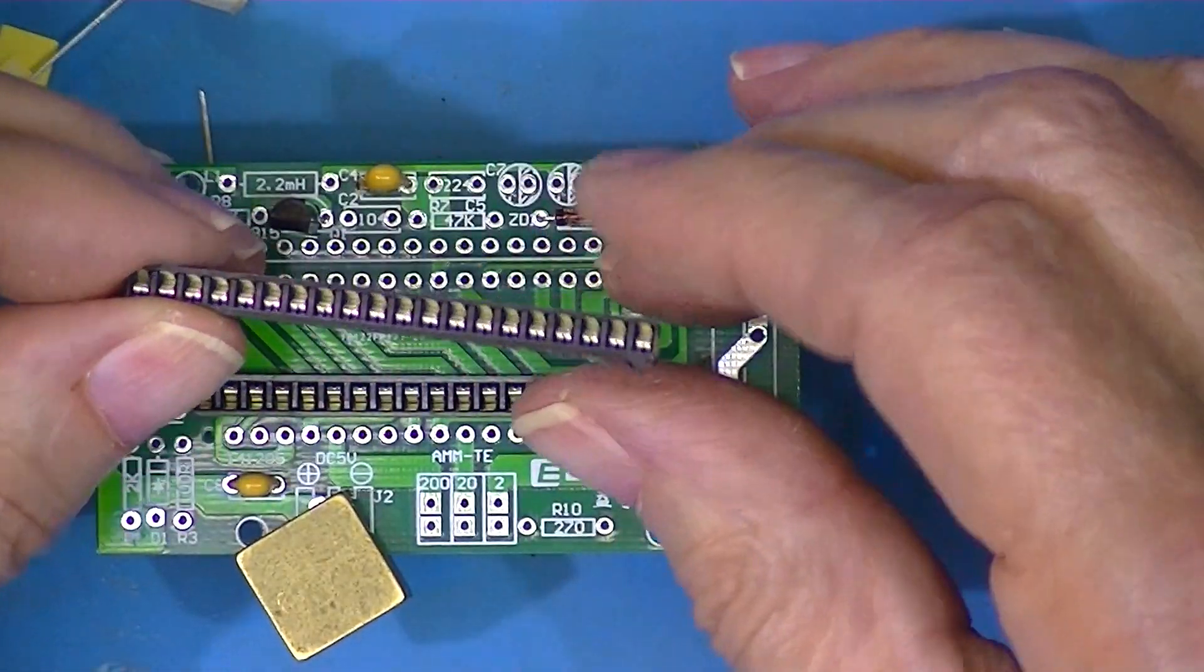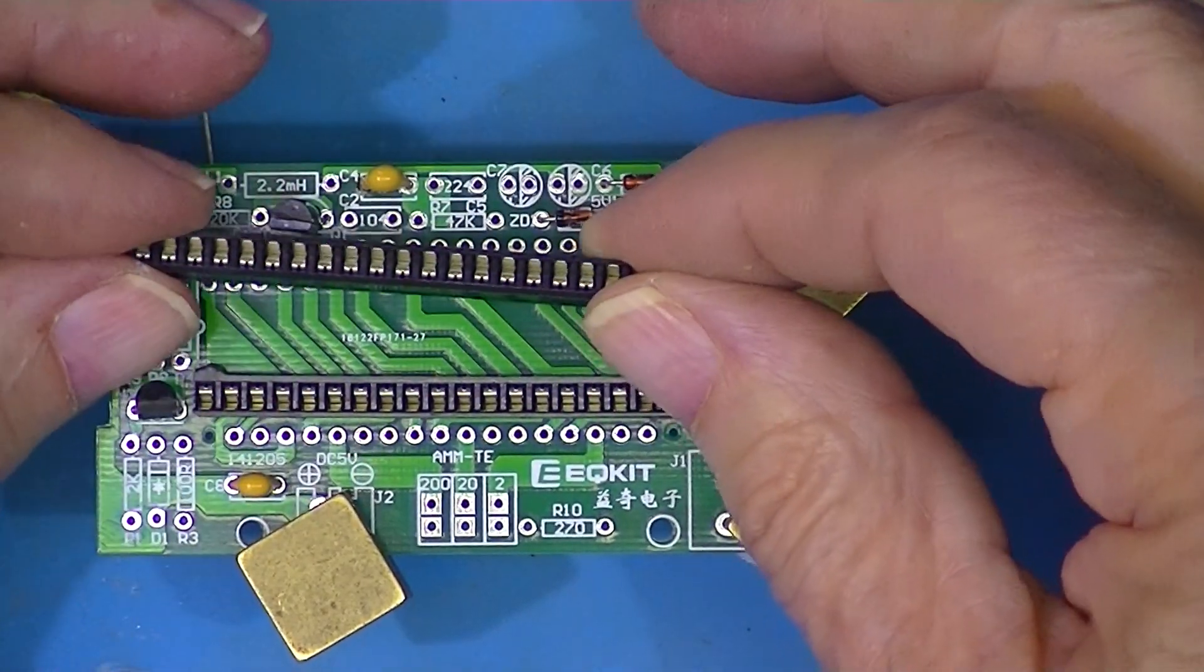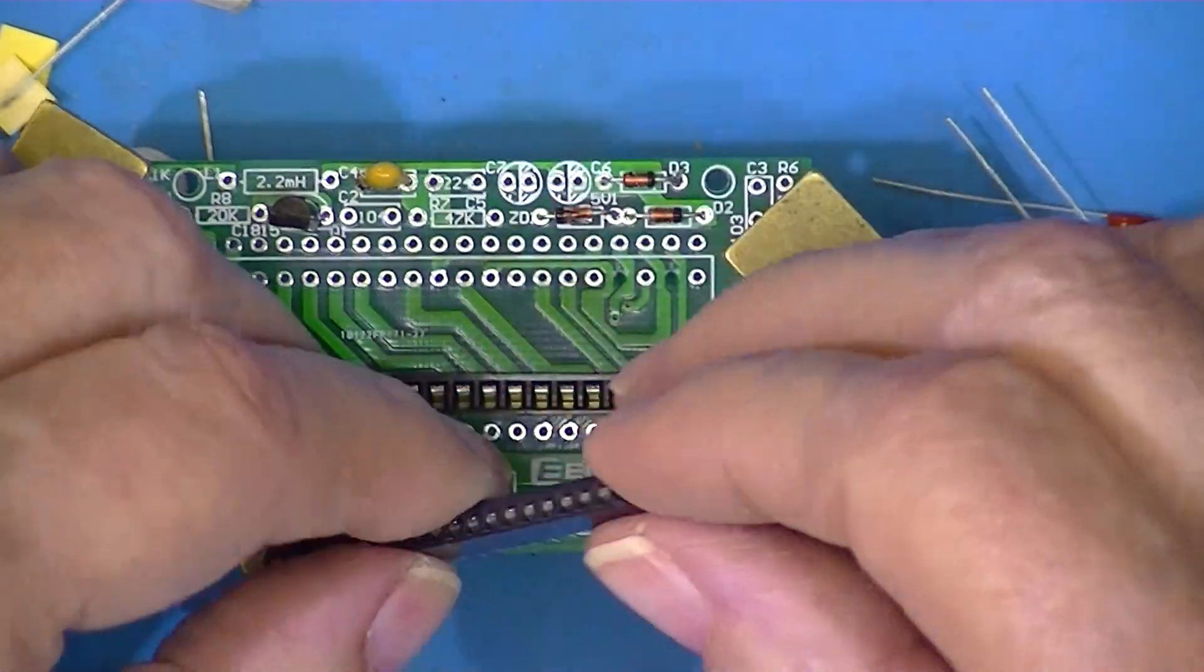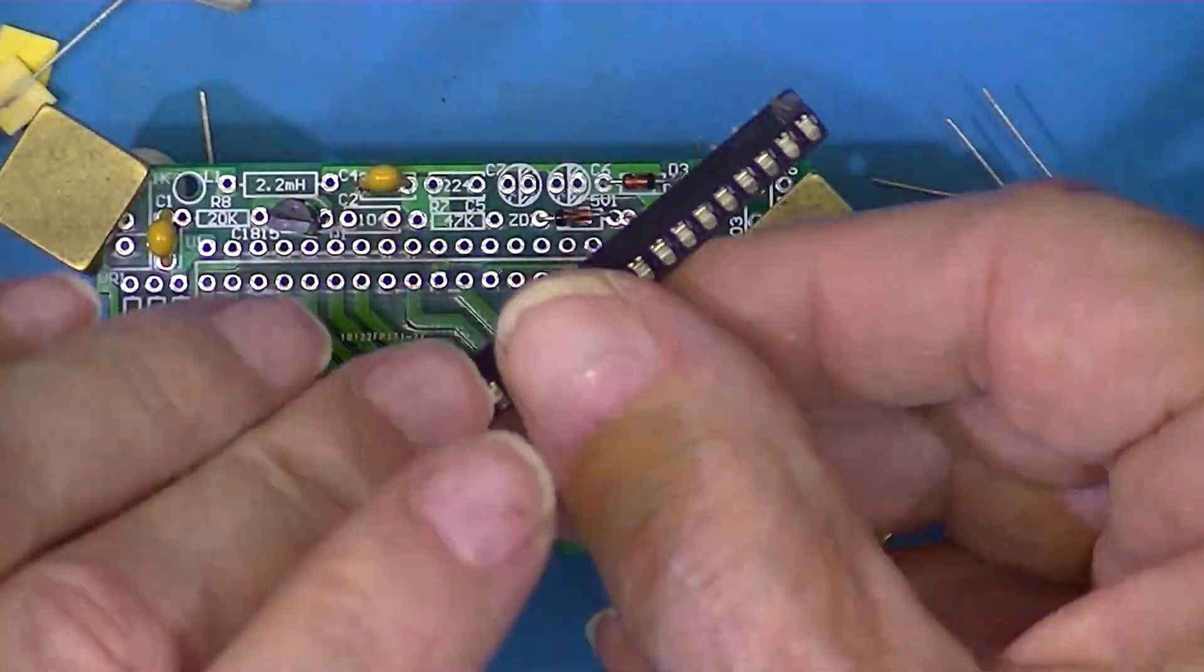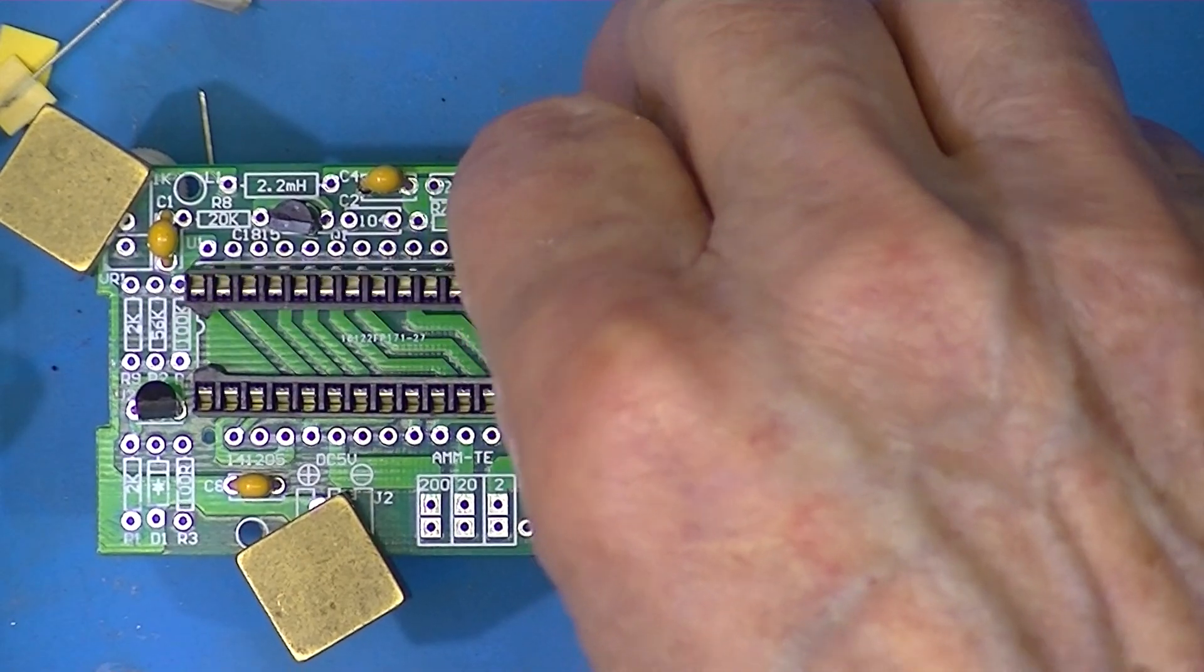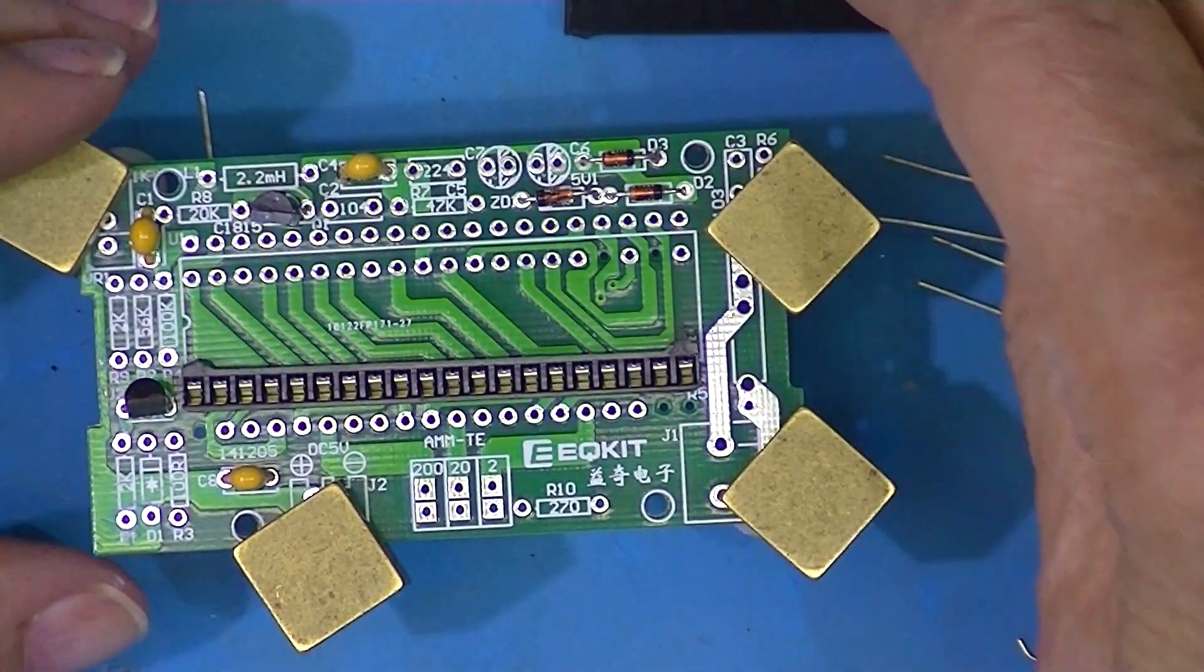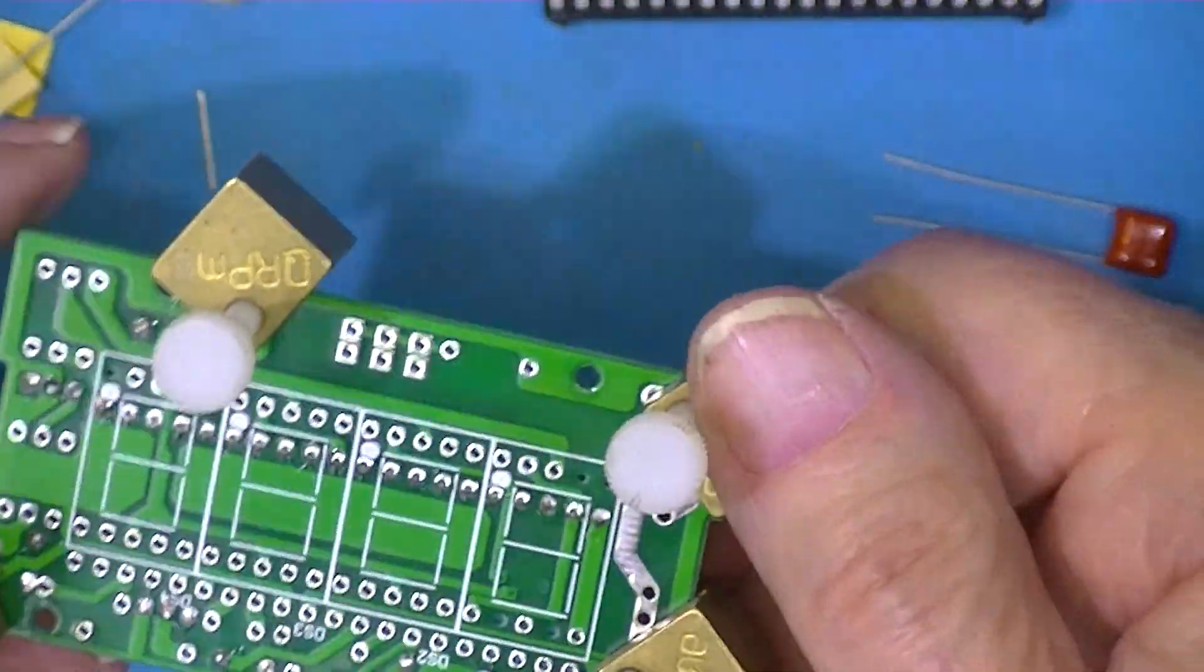Now be careful when you put these sockets in. If you cut them in half to install them, make sure these cut edges are facing each other. You want to maintain the integrity of the socket.